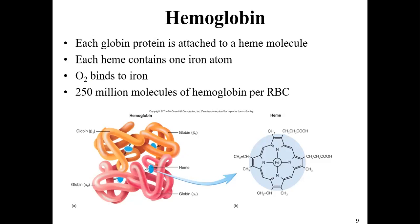Each red blood cell can have up to 250 million molecules of hemoglobin, and each one can bind up to one molecule of oxygen per subunit. So 250 million molecules times four subunits each means you can have up to about a billion molecules of oxygen inside a single red blood cell.